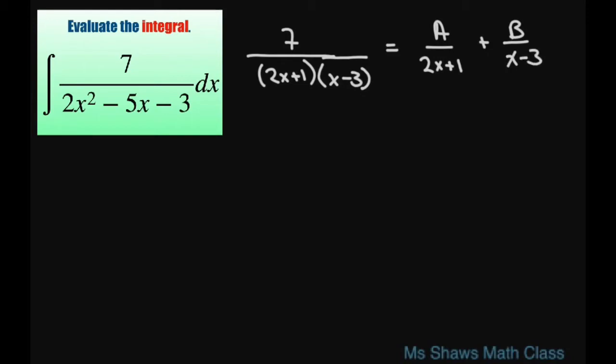Now when you clear the fractions you're going to get 7 equals A times x minus 3 plus B times 2x plus 1.